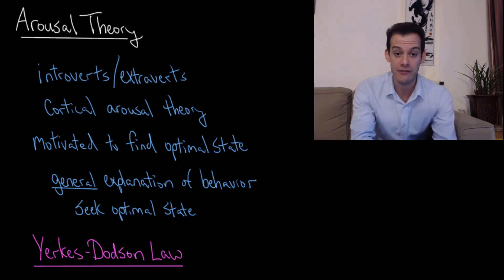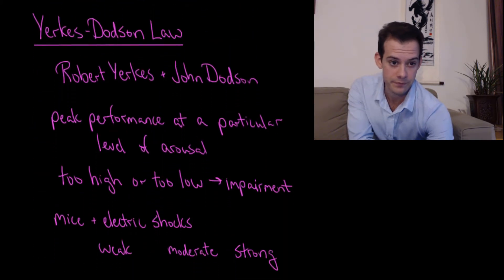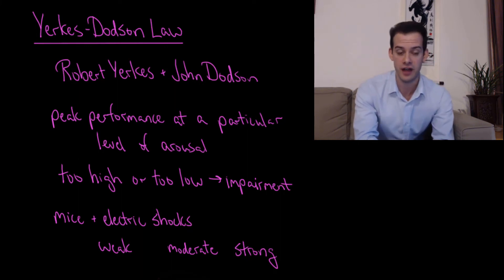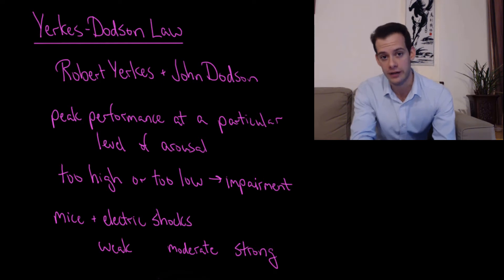Now we can also think about how our level of arousal is associated with our performance on different tasks, and so this brings us to what's called the Yerkes-Dodson Law. This is based on research by Robert Yerkes and John Dodson. The idea of the Yerkes-Dodson Law is that our peak performance will occur at a particular level of arousal. Arousal that's below that point will hinder performance, and arousal that's above that point will also hinder performance. So whether arousal is too low or too high, both will result in impaired performance, whereas somewhere in the middle will have an optimal level of arousal.